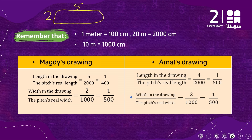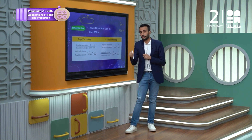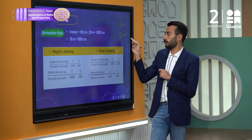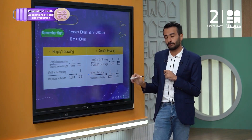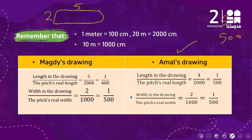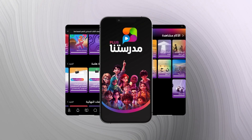For Amal's drawing, because we start with the length and width of the drawing itself, the numbers are just reversed. Instead of 500 it's 1 over 500, but both ratios are the same — so Amal's drawing is proportional to the real football playground.